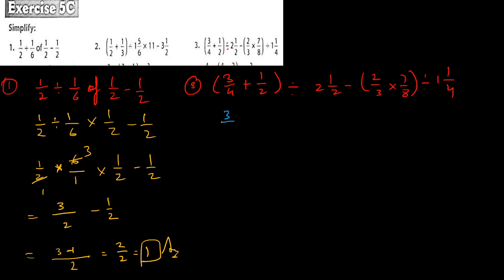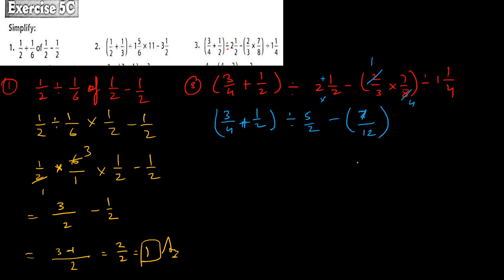So: 3 upon 4 plus 1 upon 2. Inside the bracket: 2 whole 1 upon 2 — two twos are four, four plus one is five, so five upon 2. Minus: two ones are two, two fours are eight, so seven ones are seven and three fours are twelve — giving 7 upon 12.